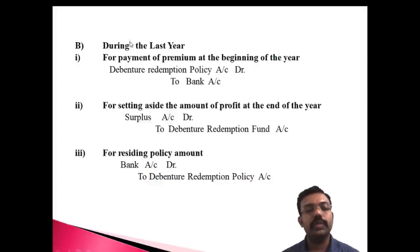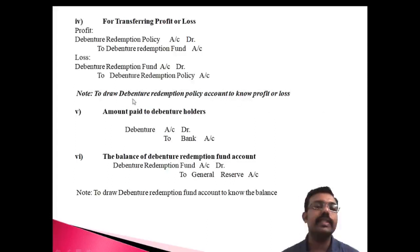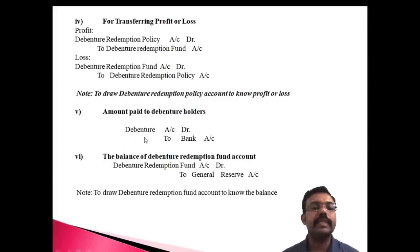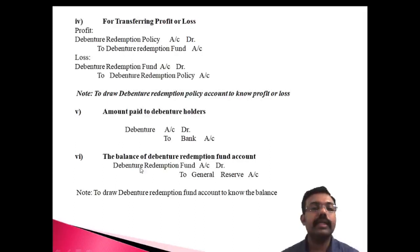To identify the profit or loss, you need to draw the Debenture Redemption Policy Account. The next entry is the amount paid to the debenture holders: Debenture Holders Account debit, Bank Account credit. Then, the balance of the Debenture Redemption Fund Account is transferred to the General Reserve. We have to draw the Debenture Redemption Fund Account to know the balance. These are the important entries regarding the last year.